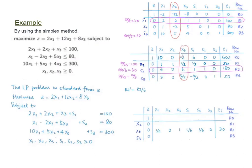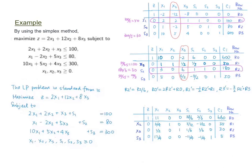With x3 as the key column, among the numbers in the constraint equations we pick those which are positive and calculate the ratio of the right-hand side value of the corresponding row divided by that number, then compare ratios to find the minimum. In our case, the ratio on the second row gives the minimum positive value. Therefore, the second row is the key row. We rewrite row 2 so that the entry in the key column becomes 1 and all other entries in the key column become 0, using Gaussian elimination row operations as before.